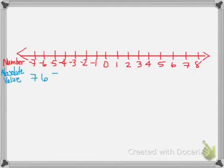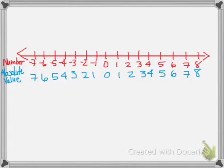If we're talking about absolute value, absolute value is the distance away from the origin. If you take a look at those blue numbers, the positive numbers are the same, but for every negative value, it's positive — because negative 1 is one unit away from the origin, negative 2 is two units away from the origin, and so on.